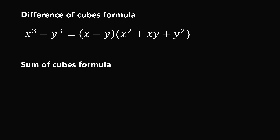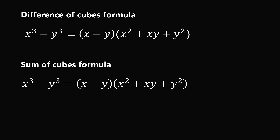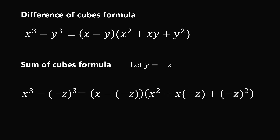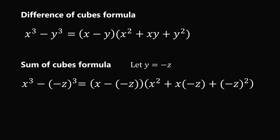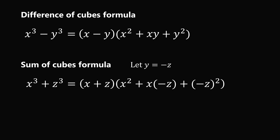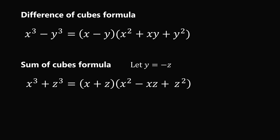To get the sum of cubes formula, we make a substitution. We take the difference of cubes formula and let y equal negative z. We substitute this in and simplify: the cube of negative z becomes negative z cubed, which we subtract, giving plus z cubed. The term negative times negative z gives positive z, and x times negative z gives minus xz. The square of negative z equals z squared.